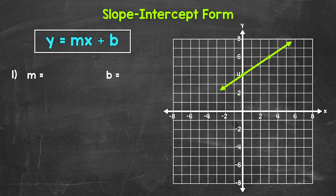For slope-intercept form, we have y equals mx plus b, with m being the slope and b being the y-intercept. And x and y are the x and y coordinates of any point on the line. All we need to do is find the slope and y-intercept, then plug those in to our equation for m and b, and we have our equation. The slope and y-intercept give us all the information we need for the equation of a line.